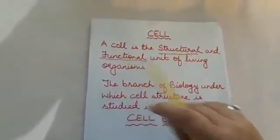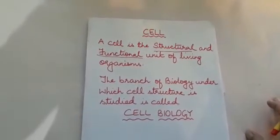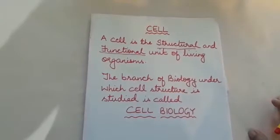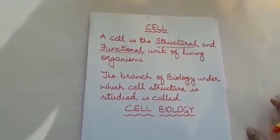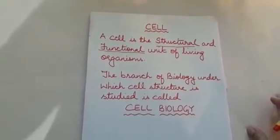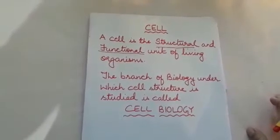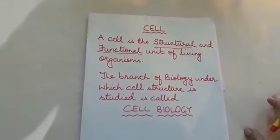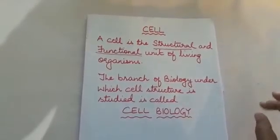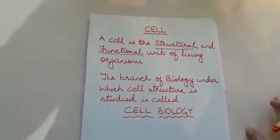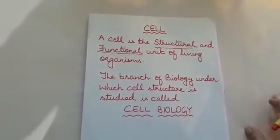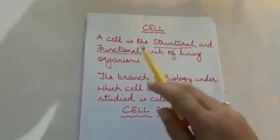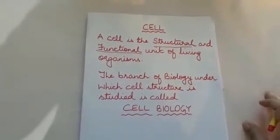Now the second aspect: functional unit. All living organisms perform certain basic functions of life which we call life processes, like nutrition, respiration, excretion, and transportation of substances from one part to another. If we think about a single cell, a single cell respires, a single cell excretes, and transportation of substances goes on within a single cell. That is why the cell is called the functional unit of life.